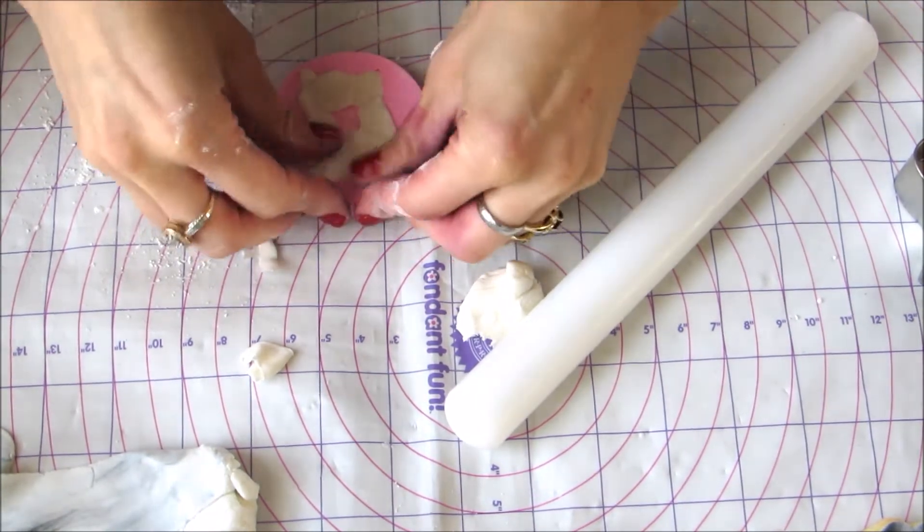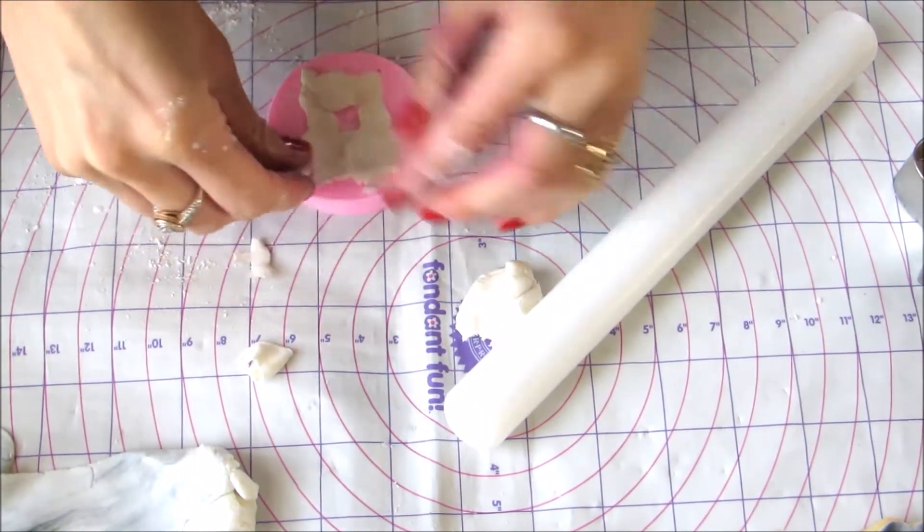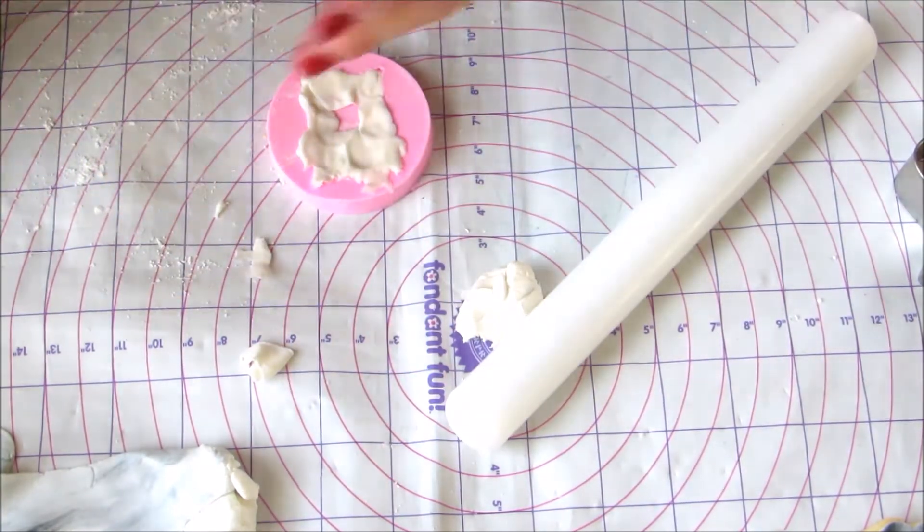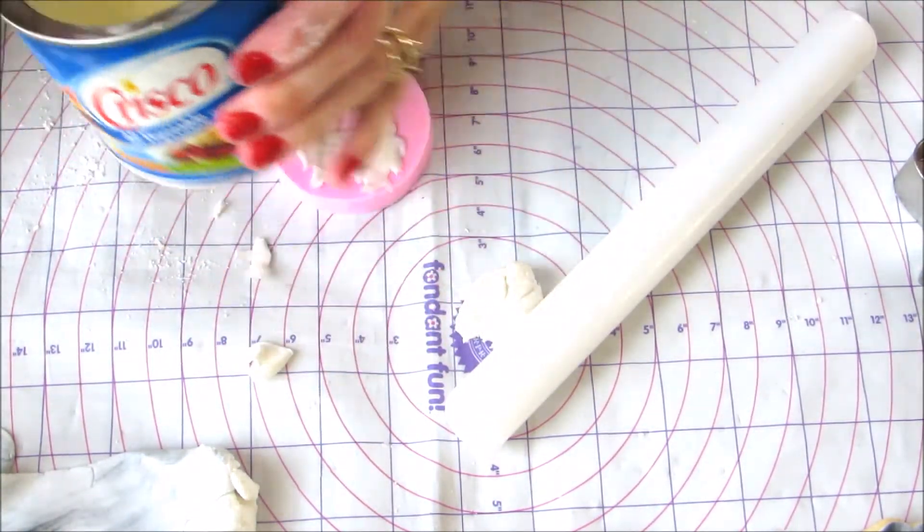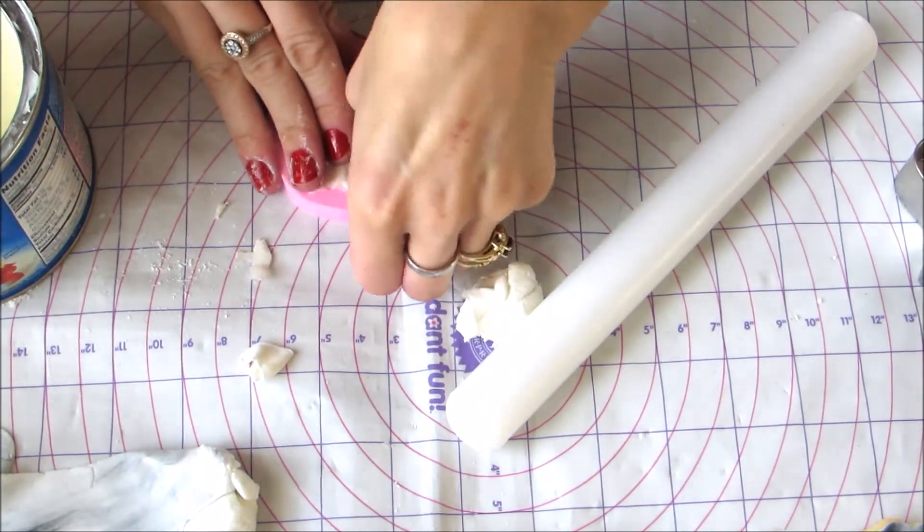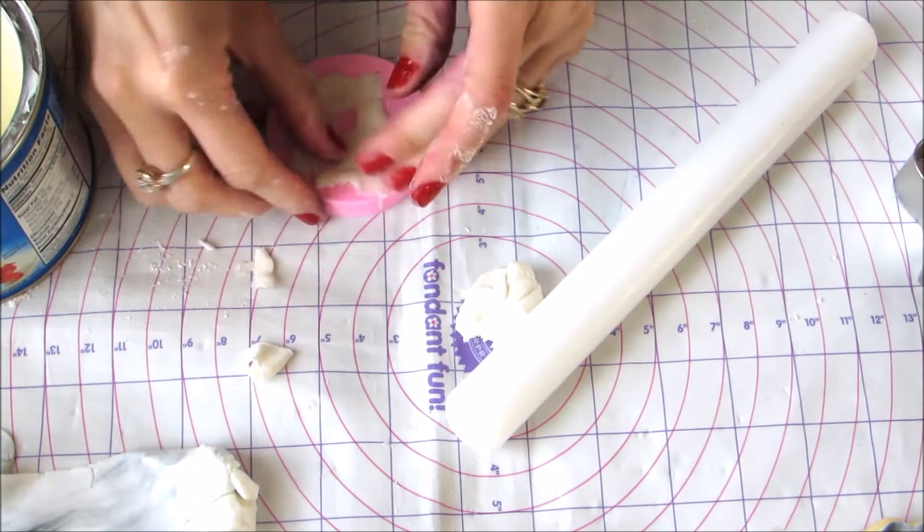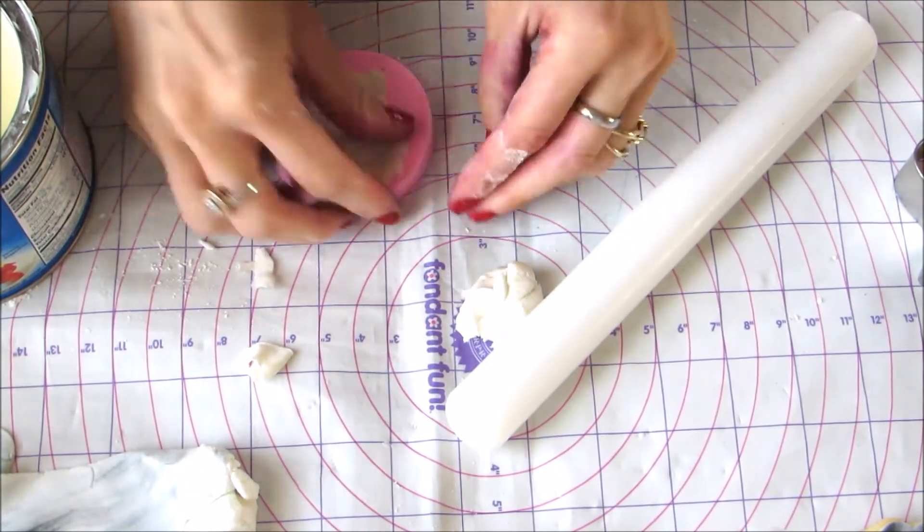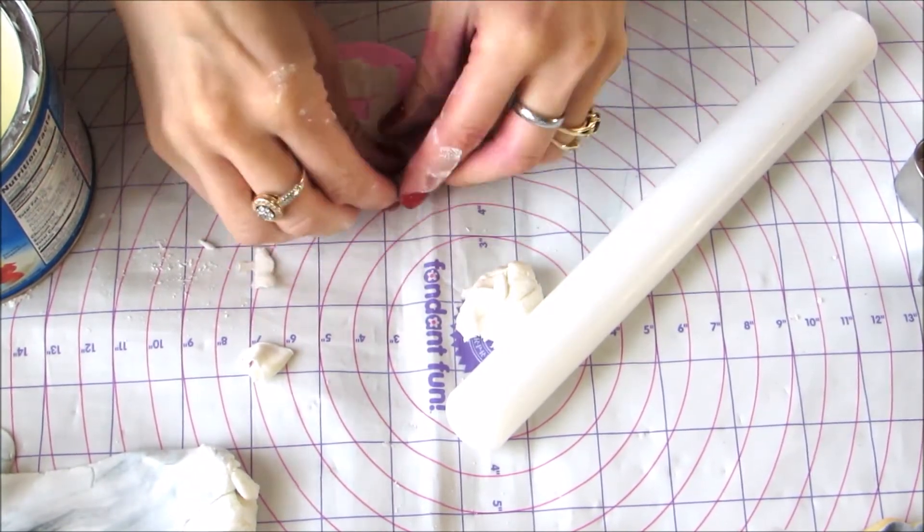Once you get it in all the little crevices, what I do is put some Crisco on my fingers and try to break away the outer pieces. Again, everyone has a different method. This one just happens to work best for me.